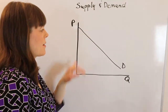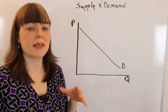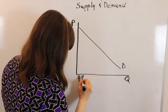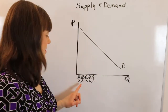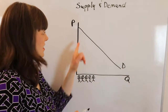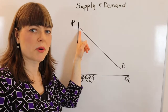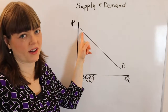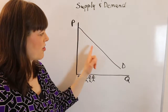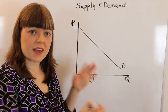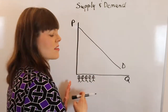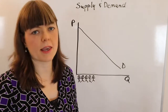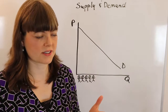We want students thinking about the demand curve as people lined up in order along this axis — the person lined up first is the person who values the product the most, the person who lines up second values it second most, and so on. Thinking of demand curves as people lined up in order is just a really useful way of thinking about how the demand curve works.